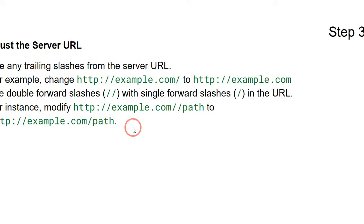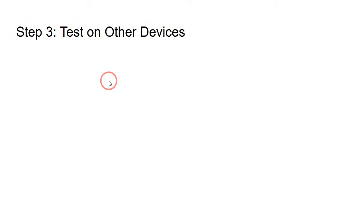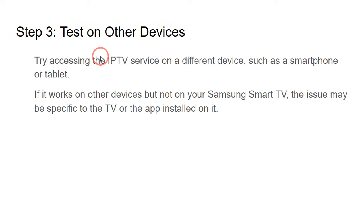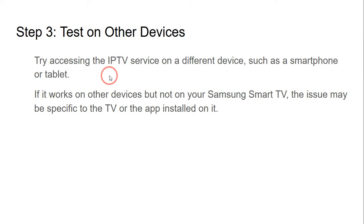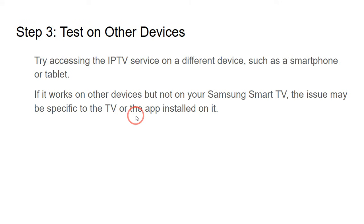If it does not work, move on to step number three: test on other devices. Try accessing the IPTV service on a different device such as a smartphone or tablet. If it works on other devices but not on your smart TV, the issue may be specific to the TV or the app installed on it.